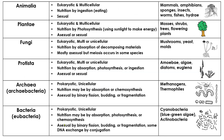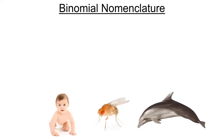We went over these different kingdoms at the very beginning of the year. Just reminding you that we recognize similarities and differences between the different kingdoms in terms of their cell structure — eukaryotic versus prokaryotic — their nutrition abilities, whether they're autotrophic or heterotrophic, as well as their reproductive types, whether they're unicellular or multicellular. That's how we classify them.